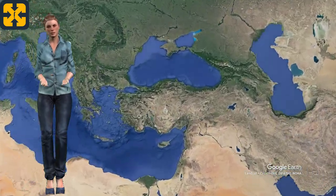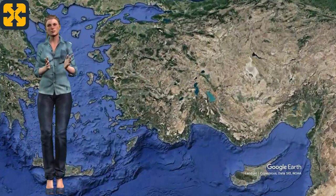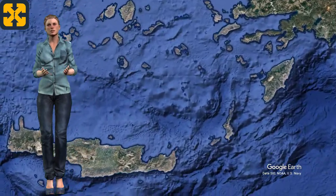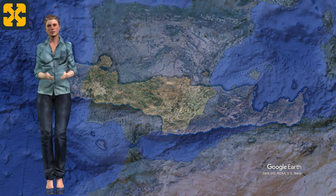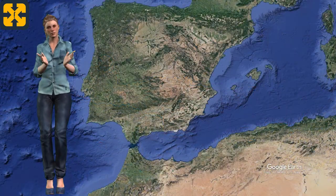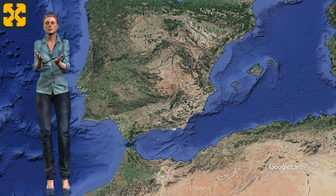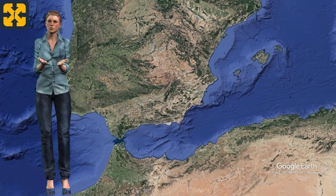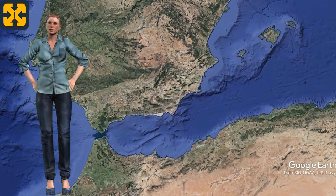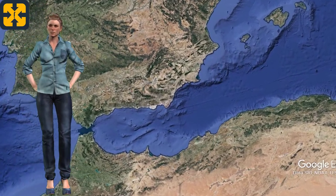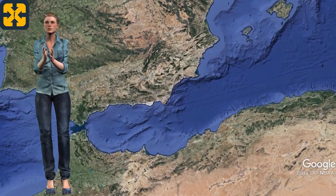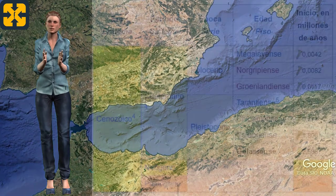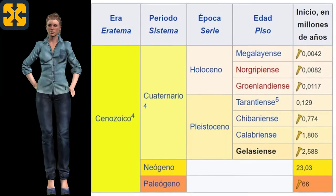The Zanclian flood also caused the isolation of many Mediterranean islands, such as the island of Crete. The formation of the Strait of Gibraltar prevented animals from crossing between Africa and Europe during this period.